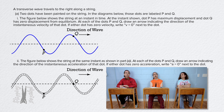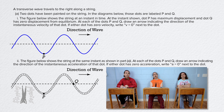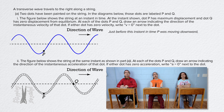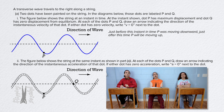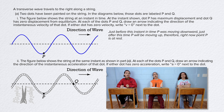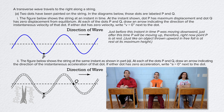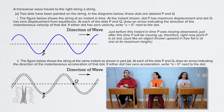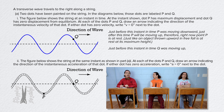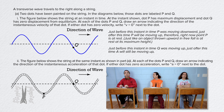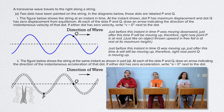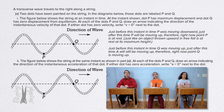A transverse wave travels to the right along a string. Part A: Two dots have been painted on the string. In the diagram below, those dots are labeled P and Q. Part AI: The figure below shows the string at an instant in time. At the instant shown, dot P has maximum displacement and dot Q has zero displacement from equilibrium. At each of the dots P and Q, draw an arrow indicating the direction of the instantaneous velocity of that dot. If either dot has zero velocity, write V equals zero next to the dot.